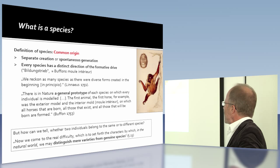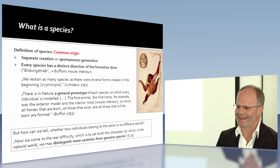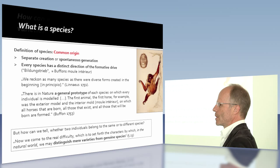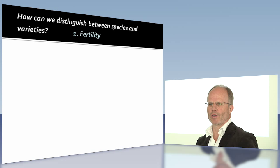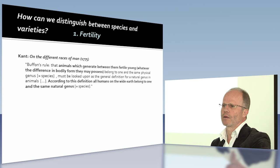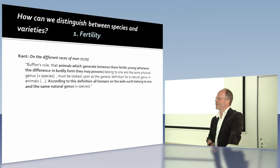Blumenbach says we come to the real difficulty: which is to set forth the characters by which in the natural world we distinguish mere varieties from genuine species. He has two criteria. The first is Buffon's rule — if two animals generate fertile young, then we call them one species. And since humans do that, according to this definition, they all belong to the same natural genus, that is, species. Very easy — so we can settle the case.